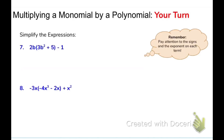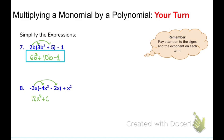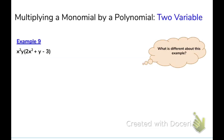Go ahead and pause this video and attempt these questions by yourself. The first one should be 6b to the third power plus 10b minus 1. For the next one, we have negative 3x multiplying outside the parenthesis: negative 3 times negative 4 gives positive 12x to the fourth power, and the next term gives positive 6x squared. There are two like terms to combine, so we get 12x to the fourth power plus 7x squared.